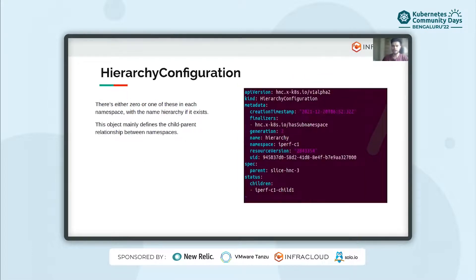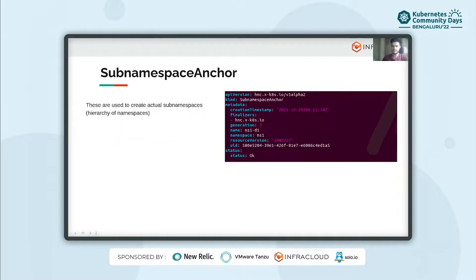The second CRD is Hierarchy Configuration — there is either zero or one of these present in each namespace, with the name 'hierarchy'. This object defines the parent-child relationship between namespaces. For example, for namespace ipoc1, its parent is slice-agency-three and its children are ipoc1-children. The third CRD is Sub-namespace Anchor — these are used to create actual sub-namespaces. Access to create or read these objects should be granted freely to users, allowing them to use hierarchical namespaces to organize their objects. Note that the sub-namespace anchor for a child namespace is present in its parent namespace.